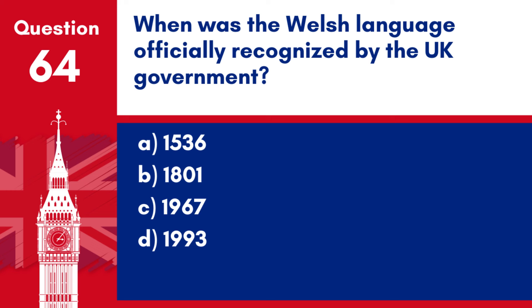Question 64. When was the Welsh language officially recognised by the UK government? a. 1536. b. 1801. c. 1967. d. 1993.